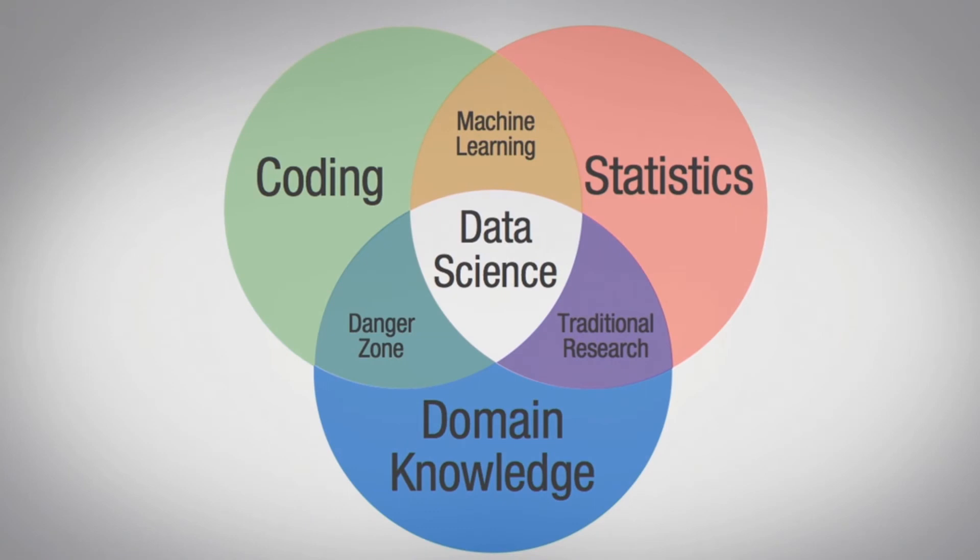The first thing we want to do is look at what's called the data science Venn diagram. This is a chart that was created by Drew Conway in 2010, and what he's arguing here is that data science involves a combination of three different skills.